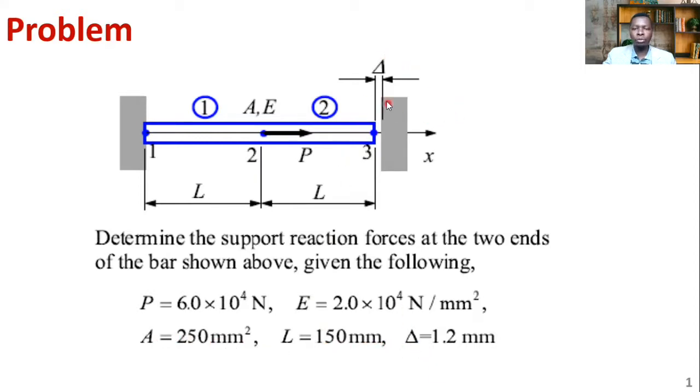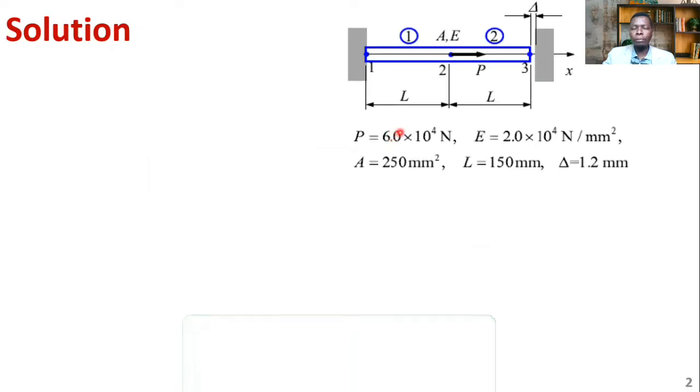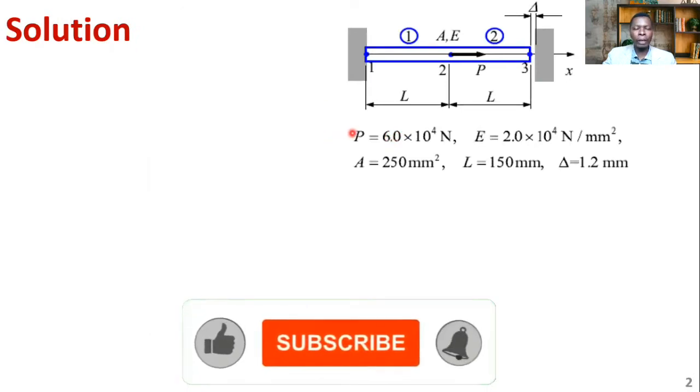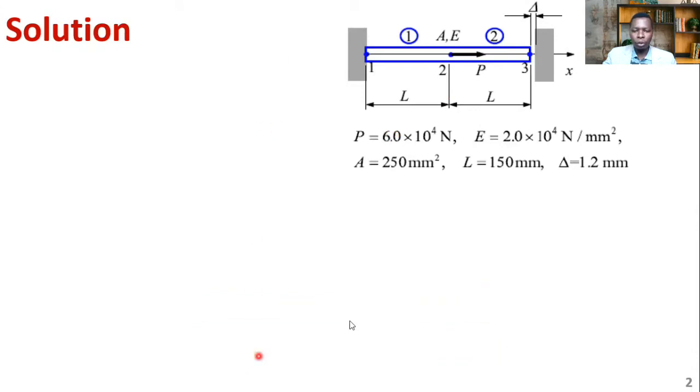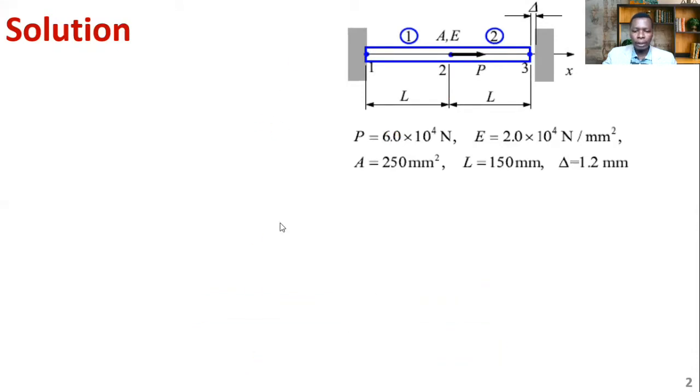The first step is to obtain what is this gap. If it touches here, we know that you have reaction 1 and reaction 3. If it doesn't touch, then the reaction here will be 0. It will be like just a bar supported on one end, stretched, but the other end is free. From strength of materials or mechanics, you found how to obtain for a bar element that is suspended or supported on one end.